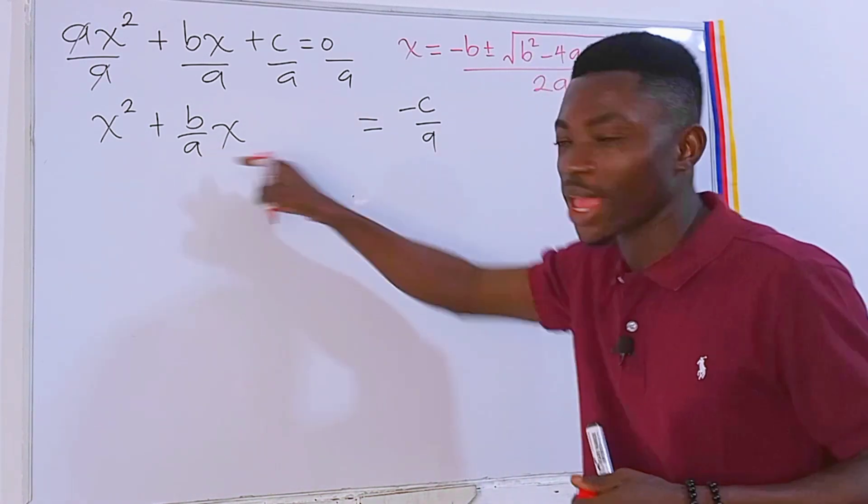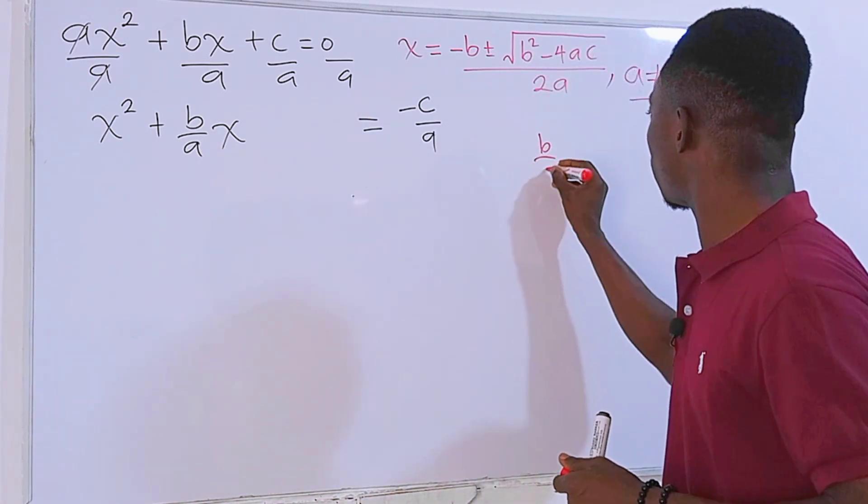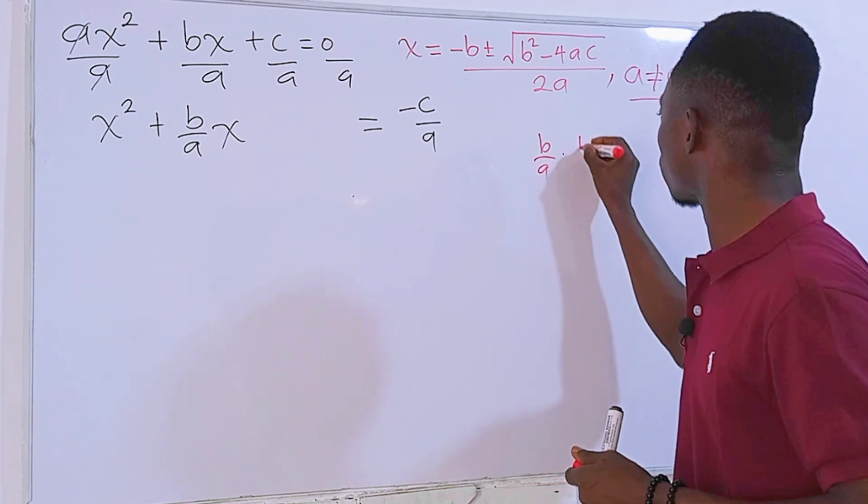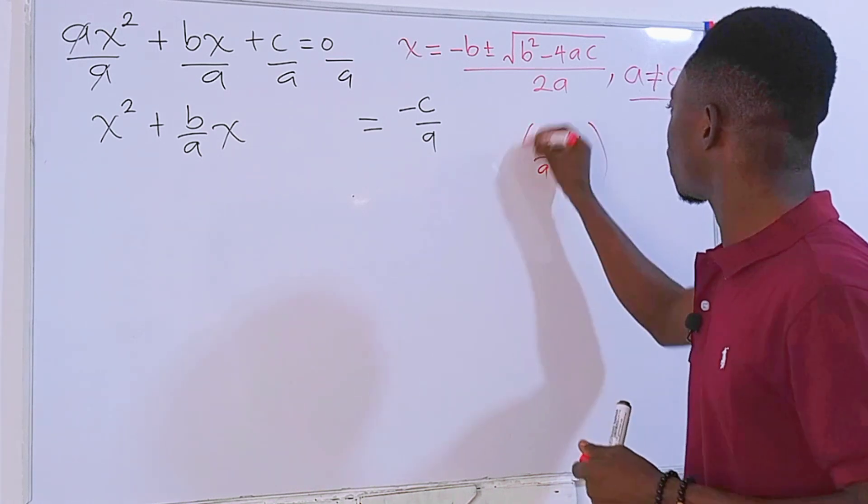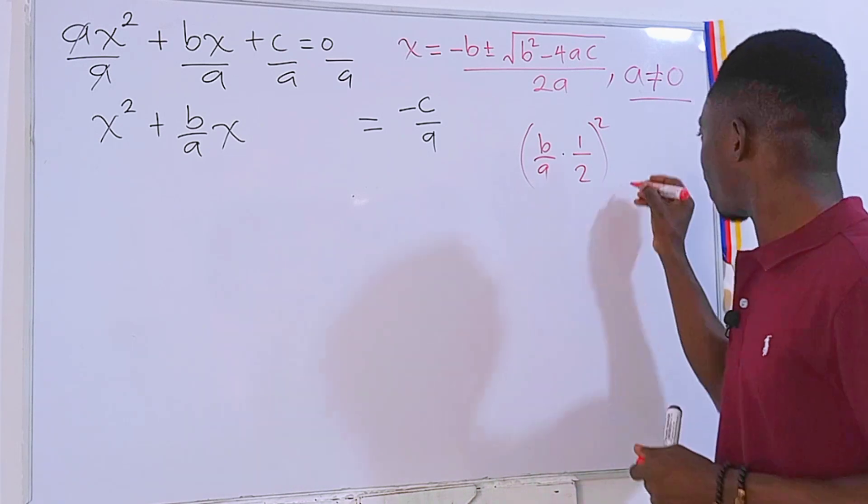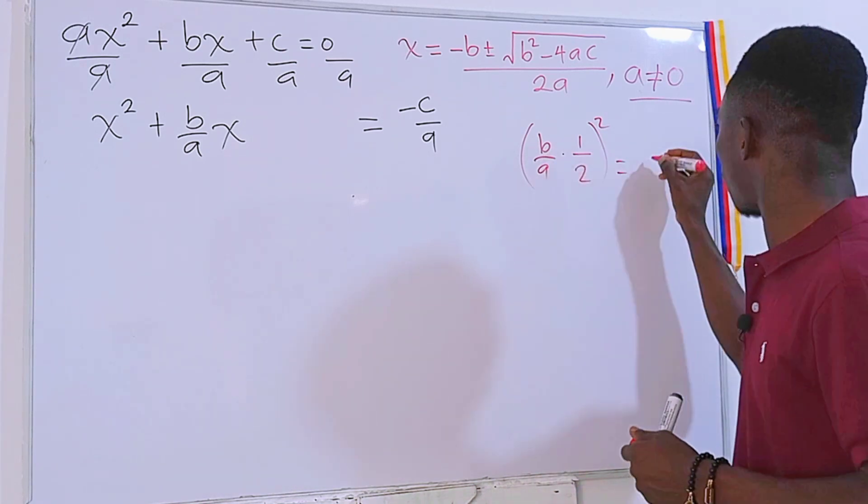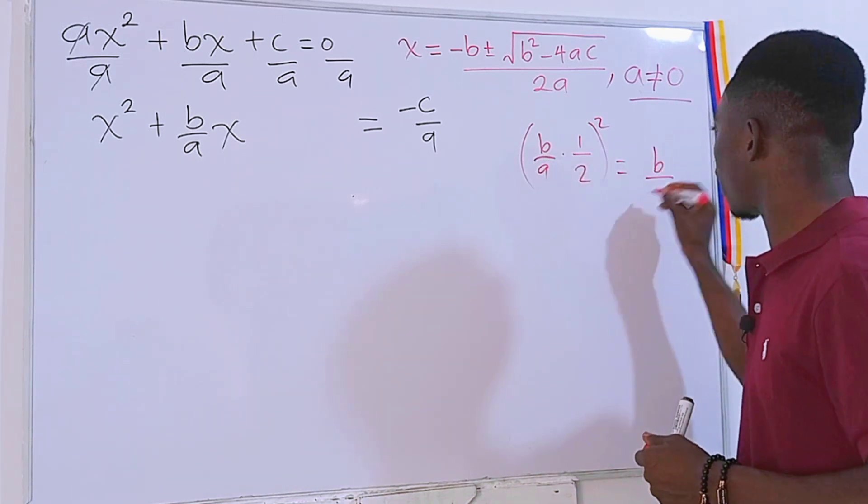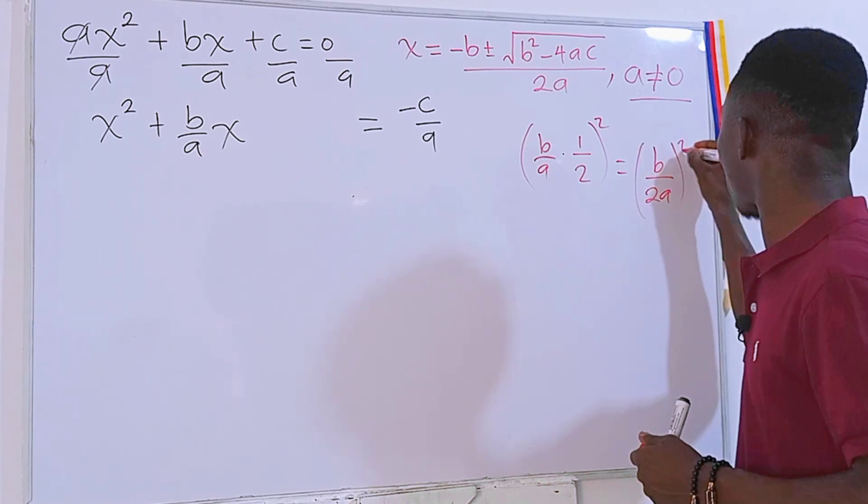The coefficient of x is b over a. I will just multiply this one by one half, then square the resource. This will be equal to b times 1 is b divided by 2a to the power 2.